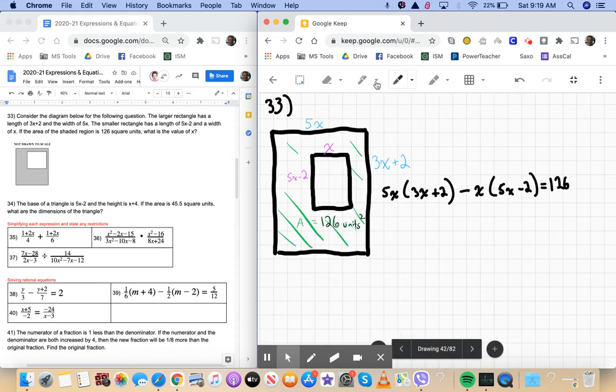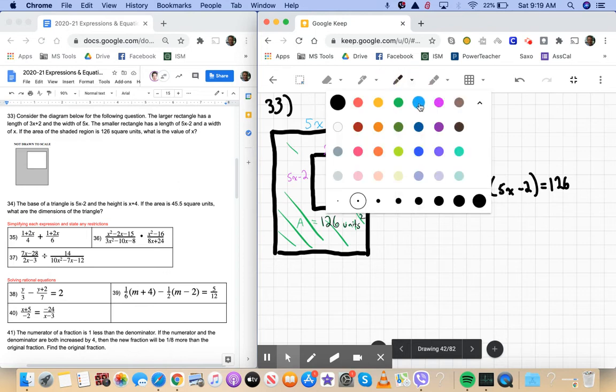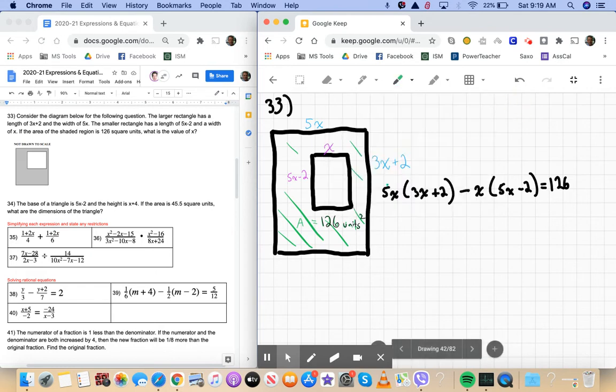So the next thing I need to do is just go ahead and expand. Let me change colors here. I'll go ahead and expand. I'm going to multiply distributive property here. So I have 15x squared plus 10x, multiply here too,